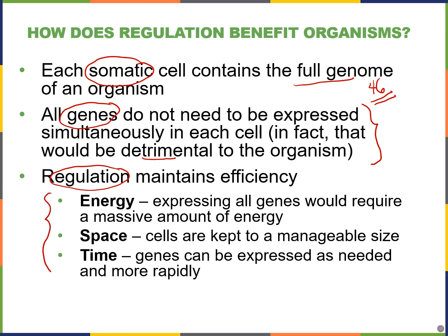So regulating which genes are expressed maintains efficiency in the body and in individual cells in terms of energy — we save a ton of energy by not expressing all of our genes. It also saves space, because DNA has to be unwound from histone proteins in order to transcribe and translate into messenger RNA and proteins. Genes are only expressed when needed, so this can occur more rapidly.